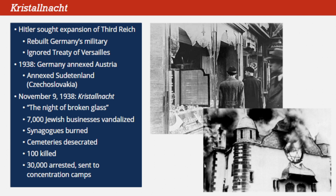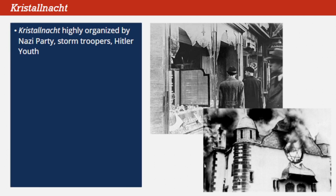The Nazi Party tried to pretend that Kristallnacht was a spontaneous event, the rising up of Germans all across the Third Reich against a hated minority. In actuality, the events of November 9 were highly organized by the Nazi Party, its stormtrooper security forces, and the Hitler Youth, a Nazi organization for boys eighteen years old and younger. Kristallnacht was a turning point, and many historians consider it the true beginning of the Holocaust.